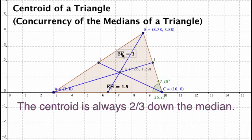So here you see BK is 3. So from this vertex to the centroid, it's 3. And then from the centroid out to the midpoint, it's 1.5. And it's not a coincidence here. But it actually does cut this segment into a segment that's two-thirds of the total length and then a smaller segment that's one-third.